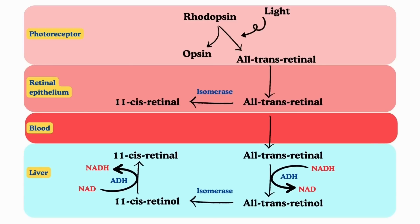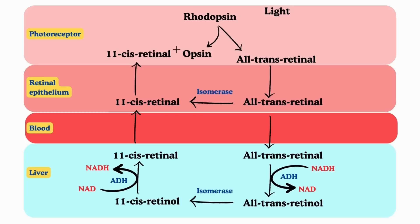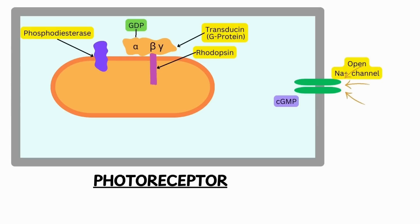11-cis retinal is transported through blood to the retina, where it combines with opsin to form rhodopsin again, which is ready for one more visual cycle on exposure to light. Now we will see how visual impulse is generated during this visual cycle.